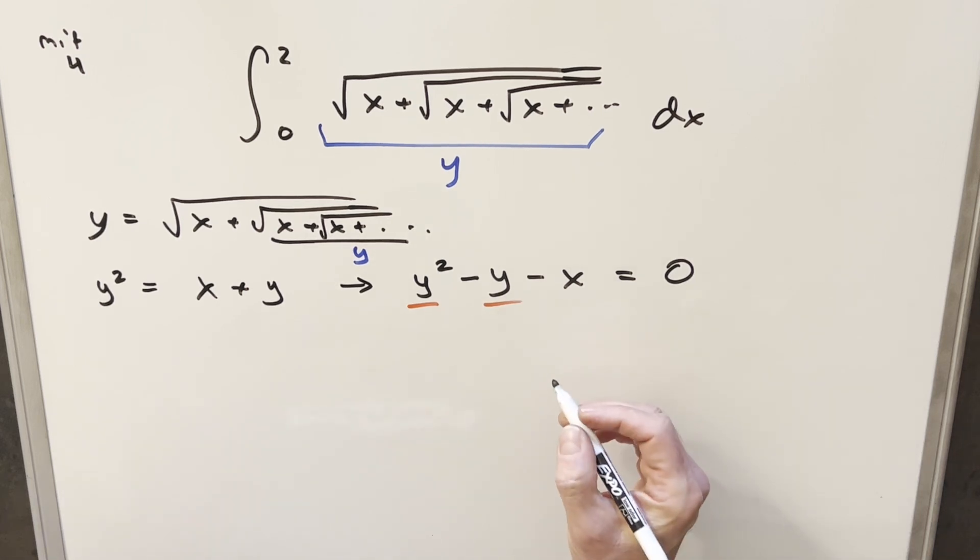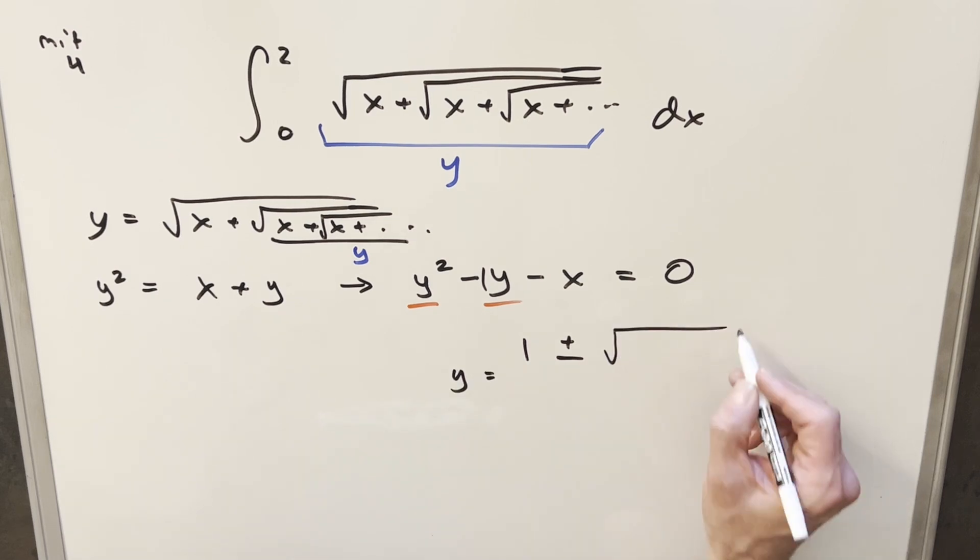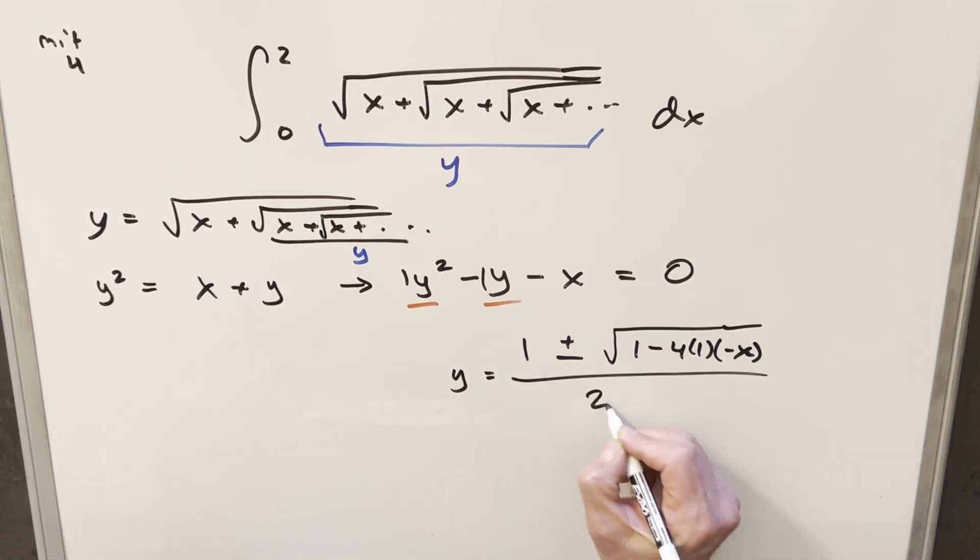For our quadratic formula, we have minus b. The b value here is minus 1, so we have 1 plus or minus the square root of b squared minus 4ac. b squared is 1, a is 1, and c is minus x. It can be a little confusing putting variables into the quadratic formula, but we'll just treat this as our c value. This is all over 2a, and a is 1, so this is just 2.